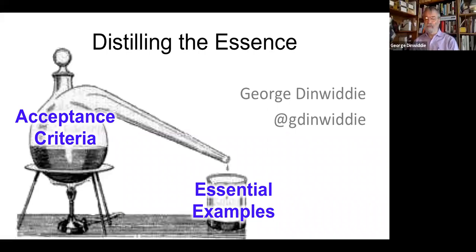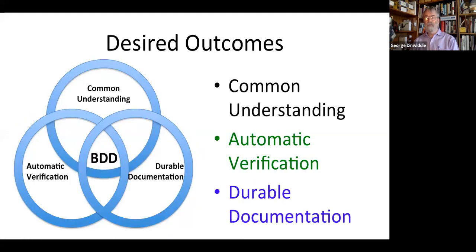So, distance. You may wonder what I mean by that. People typically start with acceptance criteria. And I find it necessary to not only come up with examples that illustrate that, but come up with the essential examples that do a good job of illustrating it. So, if we start with thinking about what our desired outcomes are, we want common understanding of what we're trying to do, what we're trying to achieve. And what examples will help us achieve that?